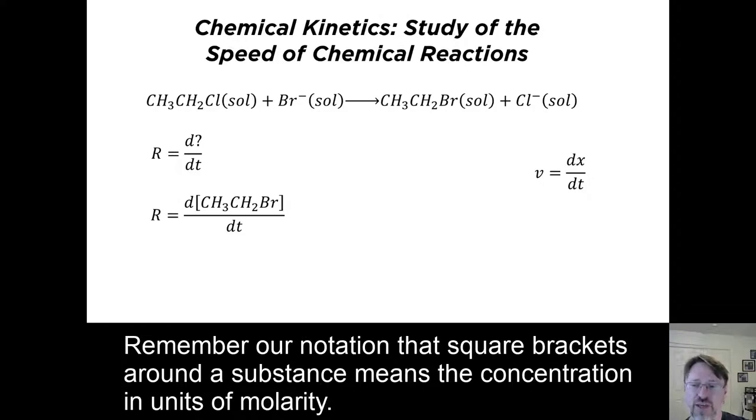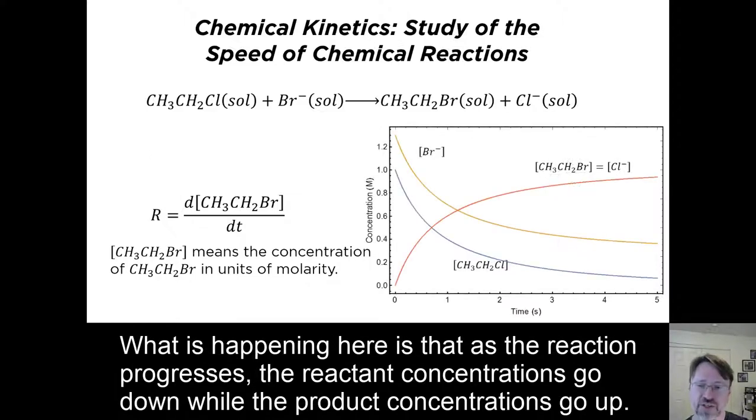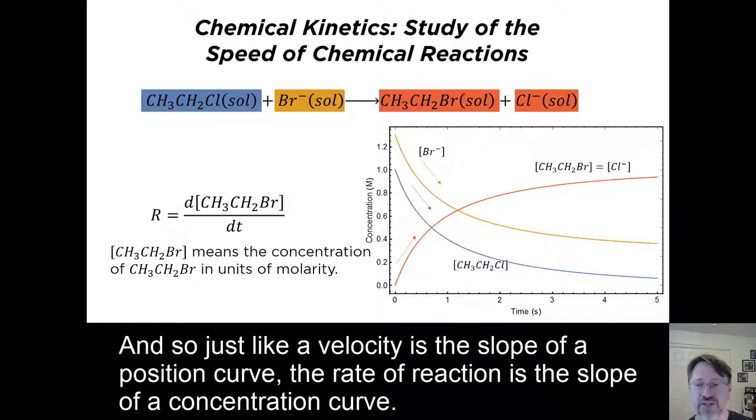Remember our notation that square brackets around a substance means the concentration in units of molarity. What is happening here is that as the reaction progresses, the reactant concentrations go down, while the product concentrations go up. And so just like a velocity is the slope of a position curve, the rate of reaction is the slope of a concentration curve.